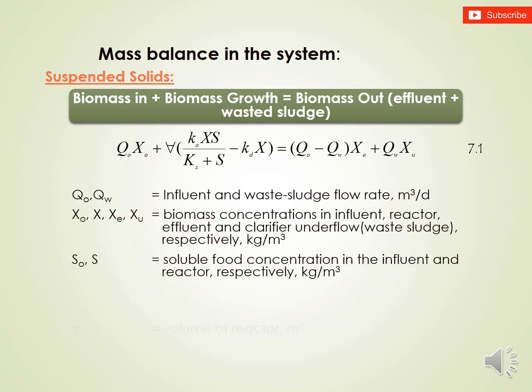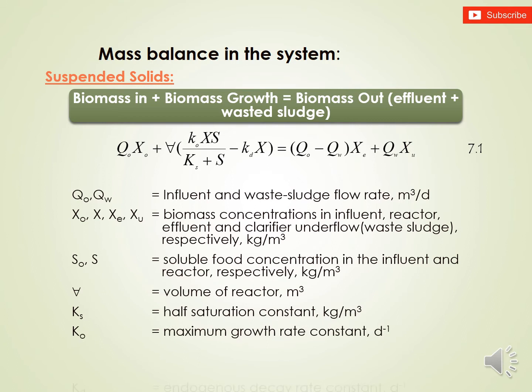Q is the flow rate in cubic meters per day. X is the biomass concentration: X₀ in the influent, X in the reactor, X_E in the effluent, and X_U in the wasted sludge. BOD is the soluble food or substrate, represented as S₀ and S in kilograms per cubic meter. V is the volume of the reactor. The constants include K_S, K₀, and K_D, each with its own definition as shown.